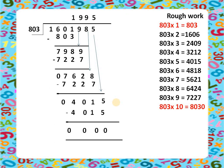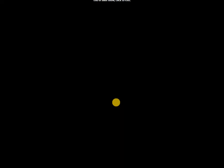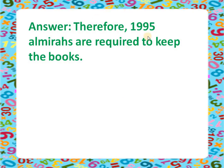We subtract 4015 and all four digits become 0. Now we label: the remainder is 0 and the quotient is 1995. The division is complete. We write the answer in a statement: Therefore, 1995 almiras are required to keep the books. Children, please try to practice this question in your rough copy. Thank you.